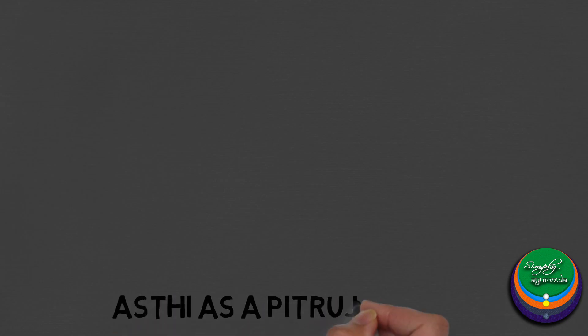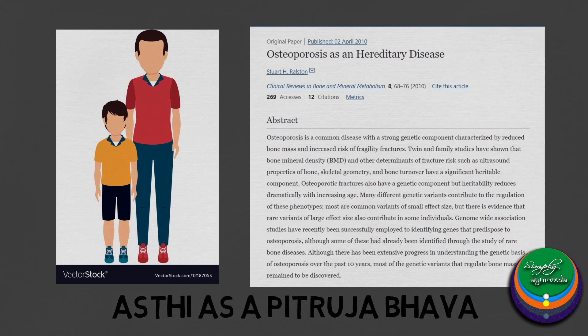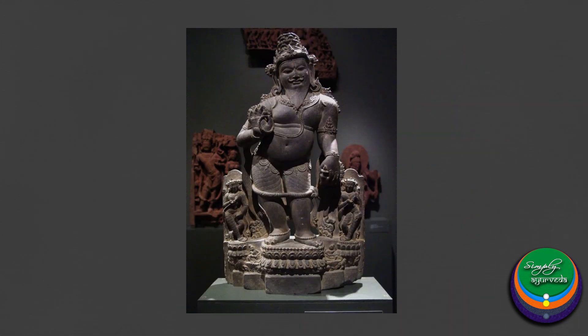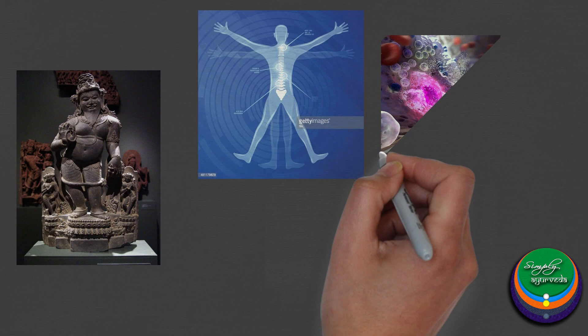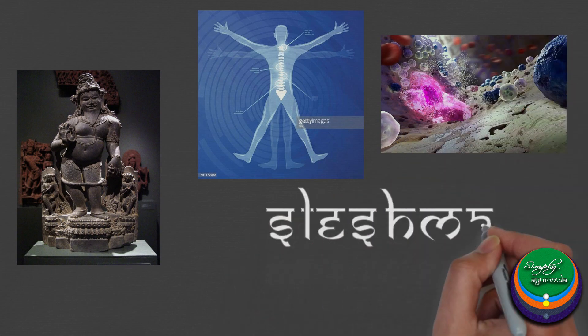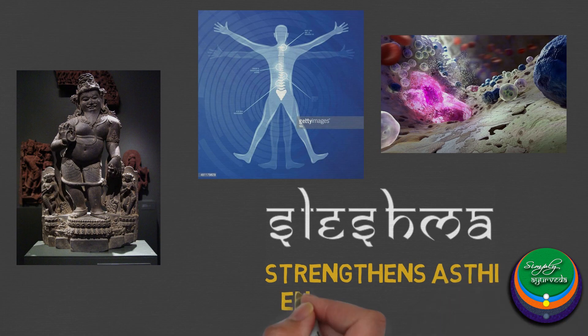It is also understood that Asthi is one among the Pitraja Bhavas, or has a paternal origin. Coming to the viewpoint of Agasthya Sampradhaya, the Siddhas consider Kapha energy to be located in the bones and the bone marrow. They structurally strengthen the Asthi and functionally enhance the Majja dhatu.